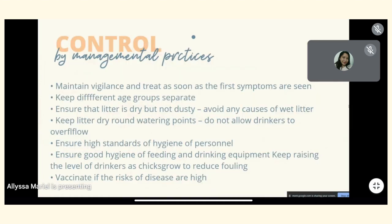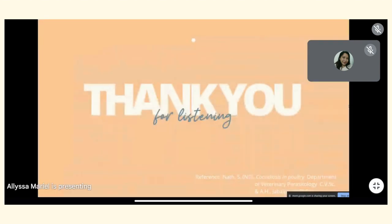For control by management practices: maintain vigilance and treat as soon as first symptoms are seen; keep different age groups separate; ensure litter is dry but not dusty; avoid causes of wet litter; keep litter dry around watering points and do not allow drinkers to overflow; ensure high standards of hygiene for personnel and feeding and drinking equipment; raise the level of drinkers as chickens grow to reduce fouling. Vaccinate if the risk of disease is high.